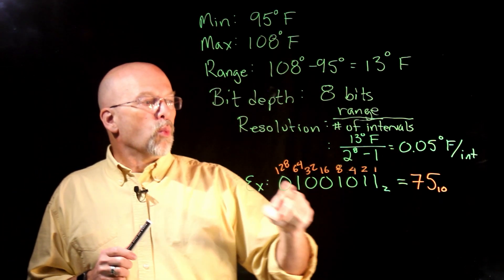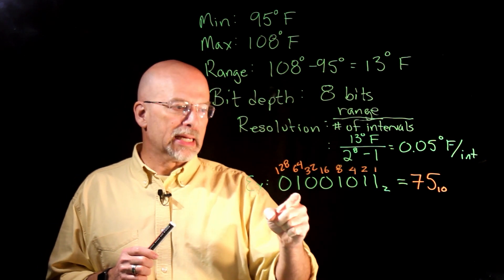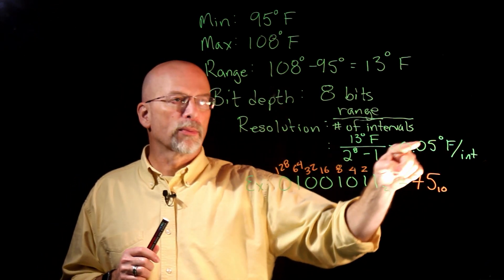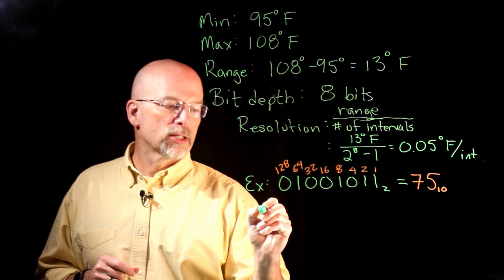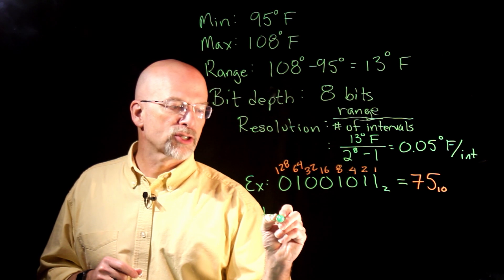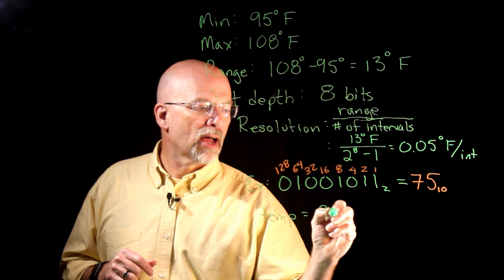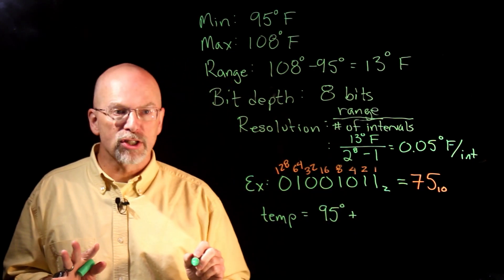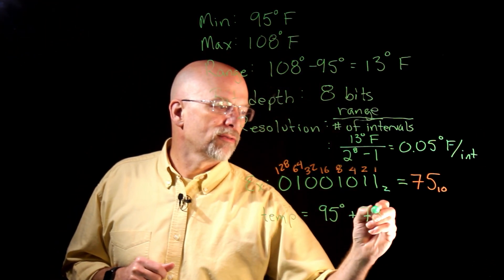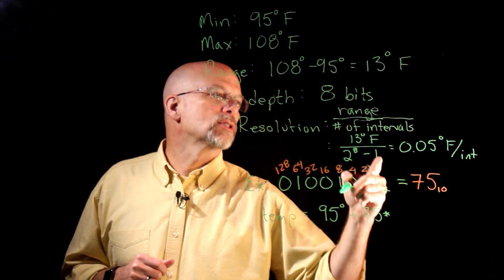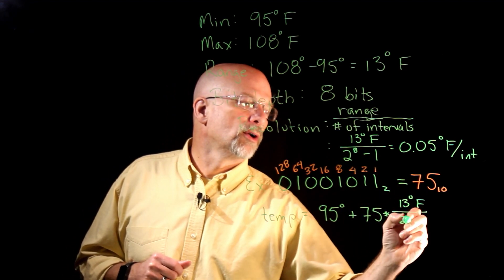When we get this back from the analog to digital converter, what it's saying is we have counted up 75 of these increments from 95. The expression is, our temperature that we're actually reading is equal to 95 degrees plus how much we've counted up from 95 degrees. That would be 75 times 13 degrees over 255.